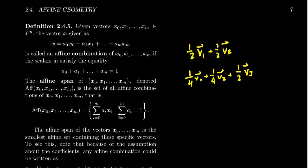But also the coefficients don't have to be positive. They just have to add up to 1. So we could take, for example, 2v₁ minus v₂. That would be an example of an affine combination because 2 minus 1 is equal to 1. That's what we're requiring here.